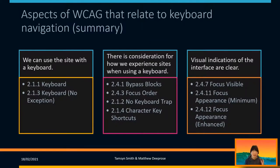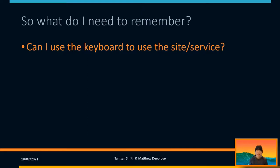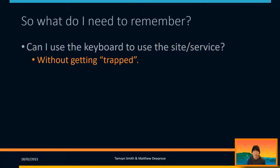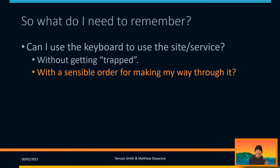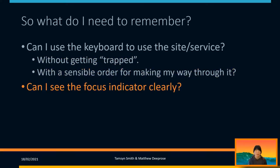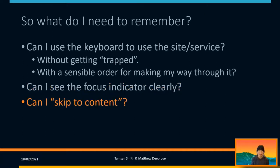So to summarize: we were looking at using the keyboard, having consideration for keyboard users, and making sure that the visual indicators are clear and visible. When testing a site or reviewing a new potential service, ask yourself: can you use the keyboard without getting trapped in any elements? Is the order that you make your way through sensible? Can you see the focus indicator? And are you able to skip to content?